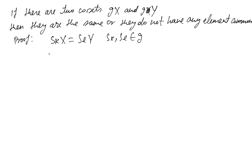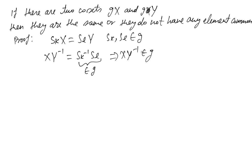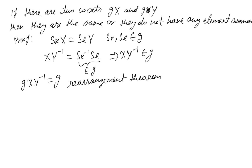If this is true, we can rewrite the whole thing as X Y inverse equals SK inverse times SL. We know SK and SL belong to G, so SK inverse also belongs to G, and thus the whole product also belongs to G. This means X Y inverse belongs to G, and if X Y inverse belongs to G then G times X Y inverse should be the same as G by the rearrangement theorem — because multiplying all elements of G by an element of G reproduces the original group in a rearranged order. This gives us GX equals GY.